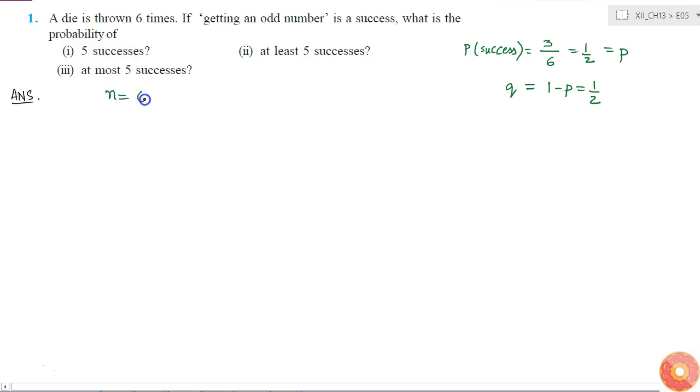Where n equals 6, P equals 1/2, and Q equals 1/2. Now, if I use the binomial distribution, in the first case, the probability of 5 successes will be simply...